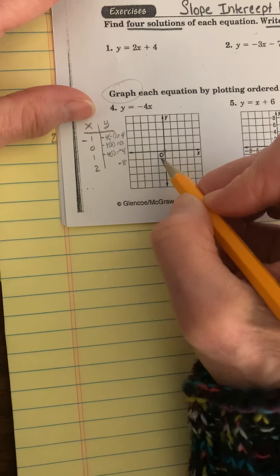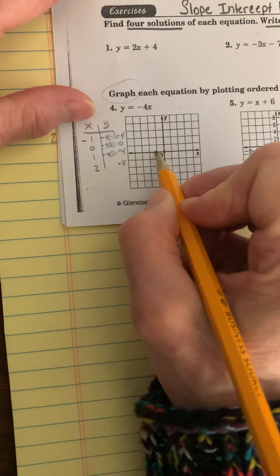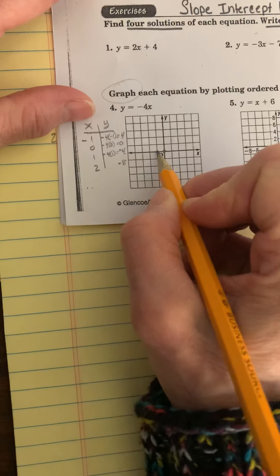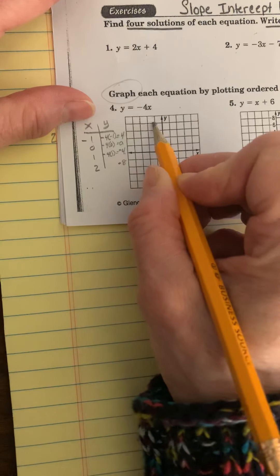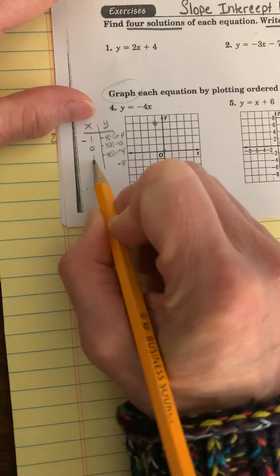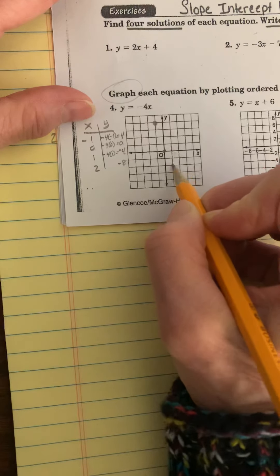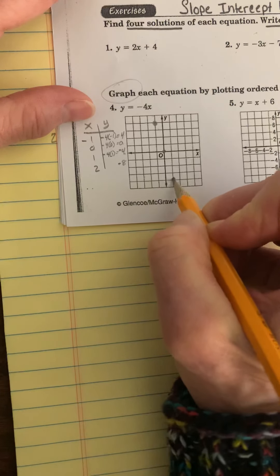So I go to the left 1 and up 4. 1, 2, 3, 4. 0, 0, I already told you. And then to the right 1, down 4. Right 1, down 4. Like that.